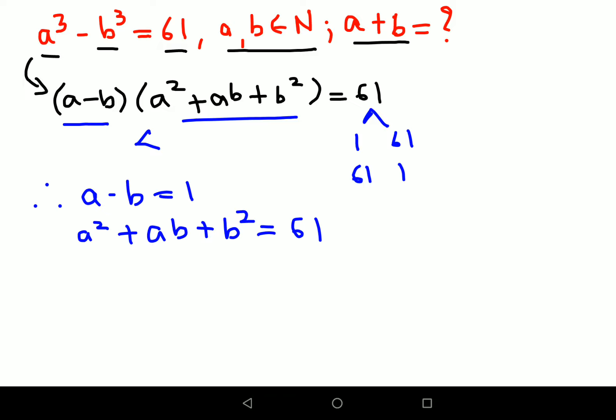So here I can say from this point that a equals to 1 plus b. Now putting this value of a over here we will get 1 plus b the whole square plus 1 plus b multiplied by b plus b square equals to 61.